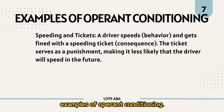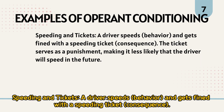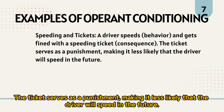Example of operant conditioning — Speeding and tickets: A driver speeds (behavior) and gets fined with a speeding ticket (consequence). The ticket serves as a punishment, making it less likely that the driver will speed in the future.